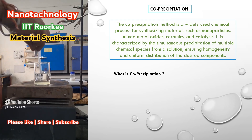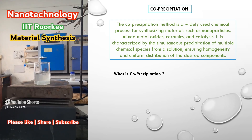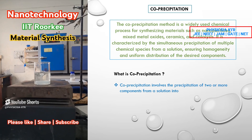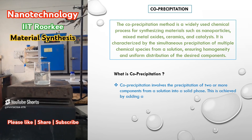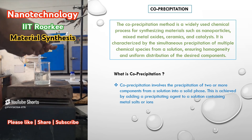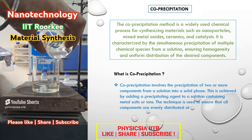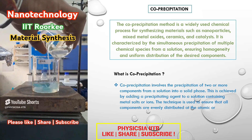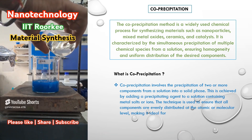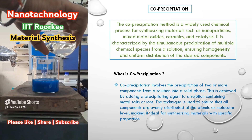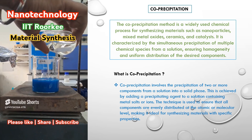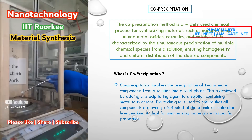So what is actually co-precipitation? Co-precipitation involves the precipitation of two or more components from a solution into a solid phase. This is achieved by adding a precipitating agent to a solution containing metal salts or ions. The technique ensures that all components are evenly distributed at the atomic or molecular level, making it ideal for synthesizing materials with specific properties.